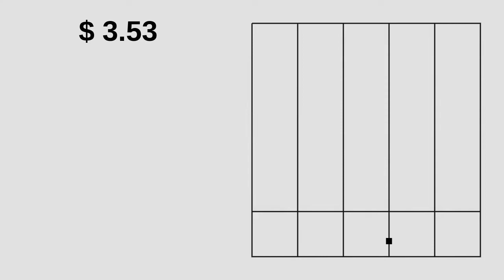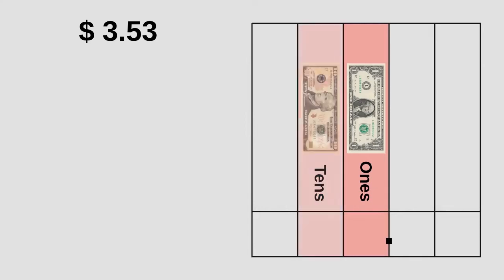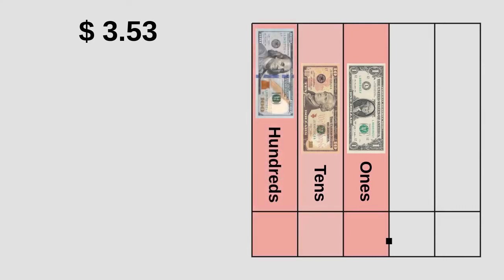In the ones column, we put the one dollar bill. In the tens column, we put the ten dollar bill. And in the hundreds column, we put the one hundred dollar bill. These columns correspond to the dollar amount without cents — for example, seven dollars, or twelve dollars, or one hundred ten dollars.